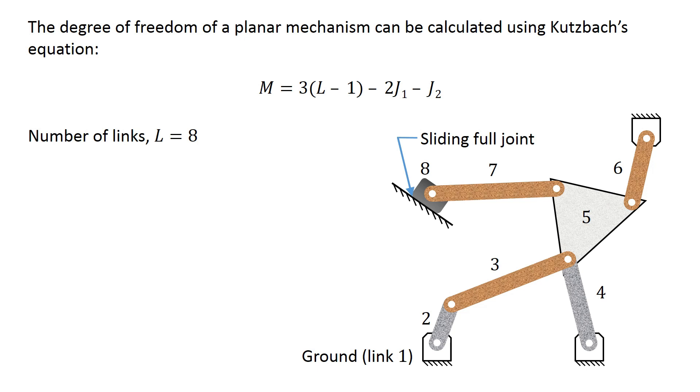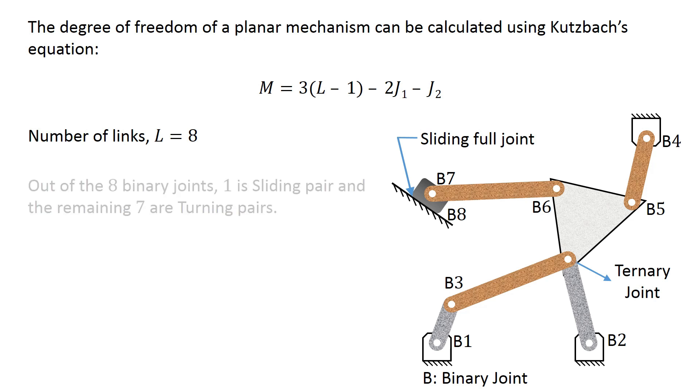In this mechanism, the number of links equals 8. There are 8 binary joints and 1 ternary joint. Out of the 8 binary joints, 1 is sliding pair and the remaining 7 are turning pairs.